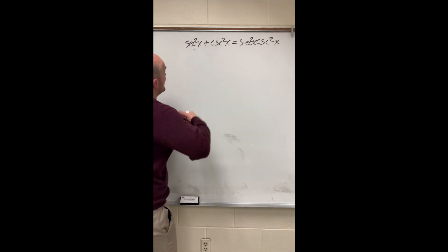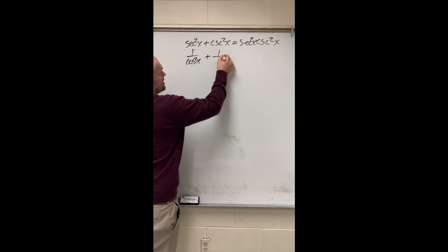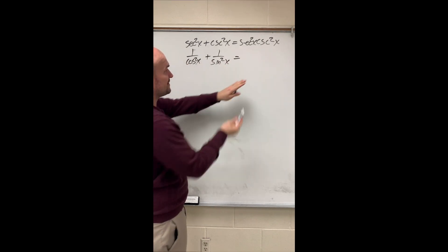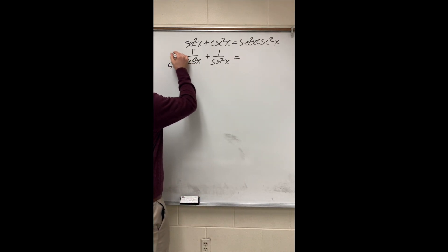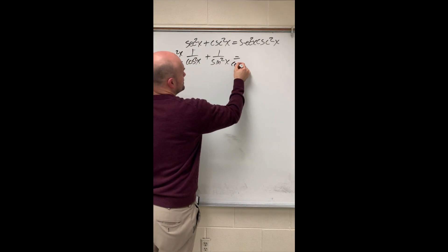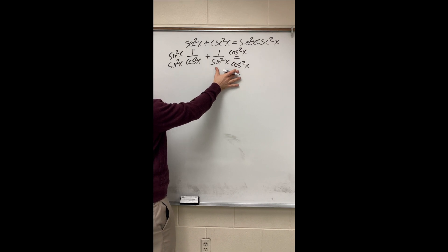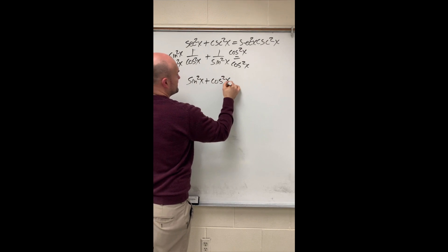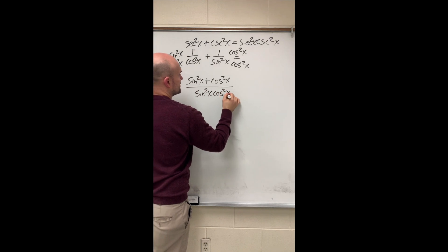Let's verify this identity. This one looks kind of weird because we can't combine like terms directly, but what I can do is rewrite this as cosine of x plus 1 over sine squared of x using my reciprocal identities. Now I can combine these together by finding the common denominator, which is going to be the product of the two denominators — sine squared of x times cosine squared of x. In the numerator I get sine squared of x plus cosine squared of x, all over sine squared of x times cosine squared of x.